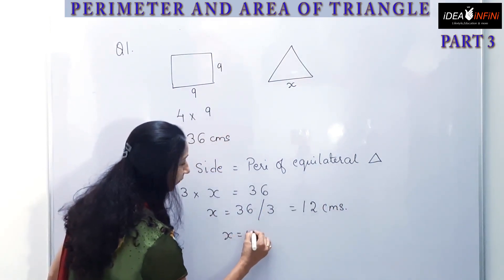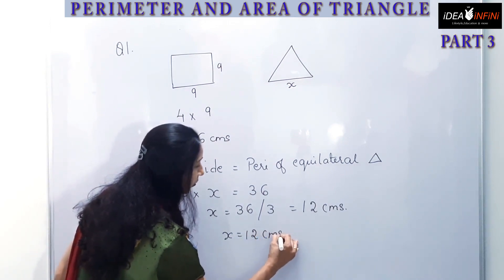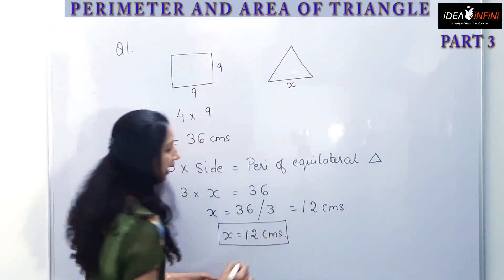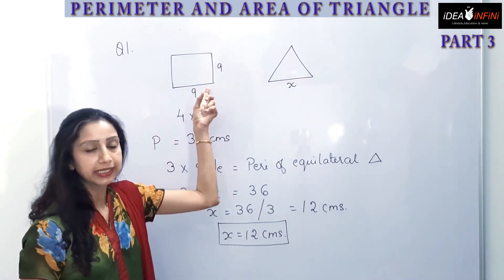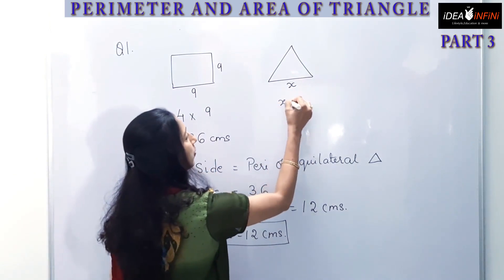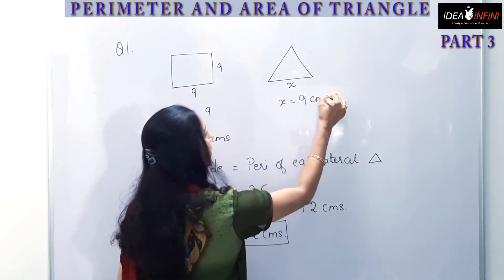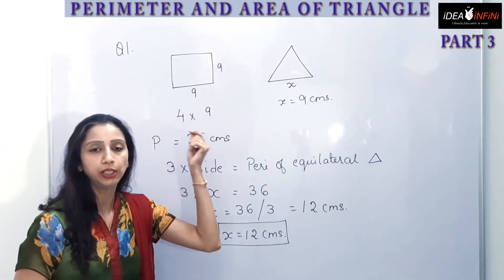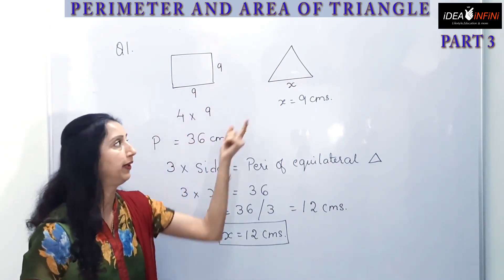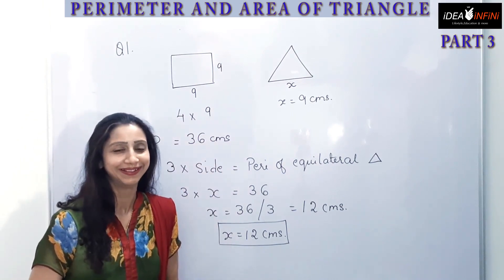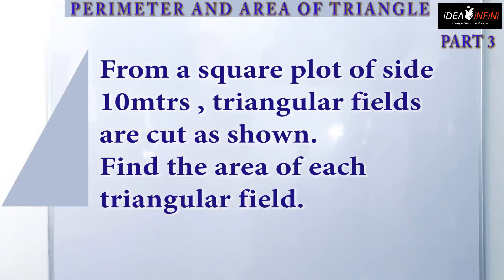So the side of the equilateral triangle is 12 centimeters when it is made from a square of side 9 centimeters. This is how we solve problems when a wire is re-bent to make another shape. Let's see some more examples.